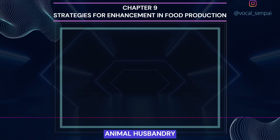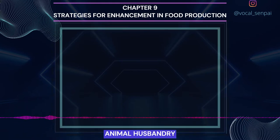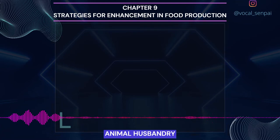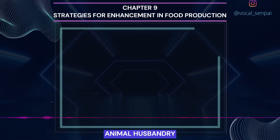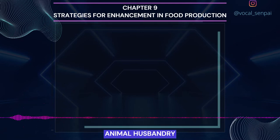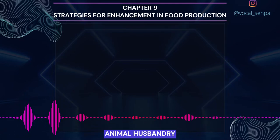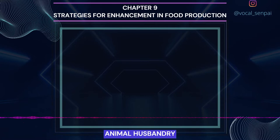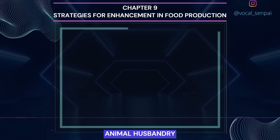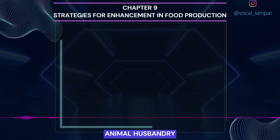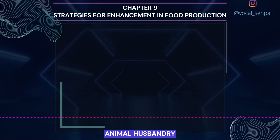Several new techniques like embryo transfer technology and tissue culture techniques are going to play a pivotal role in further enhancing food production. Animal husbandry is the agricultural practice of breeding and raising livestock. As such, it is a vital skill for farmers and is as much science as it is art. Animal husbandry deals with the care and breeding of livestock like buffaloes, cows, pigs, horses, cattle, sheep, camels, goats, etc. that are useful to humans.